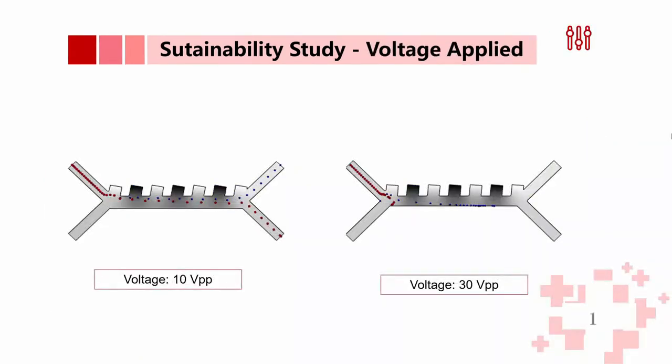For the observation of the voltage needed to achieve optimal separation, 10 volts peak-to-peak was the minimum requirement for this device to work and function well. When voltage of 30 or above was applied, the cells were damaged due to a phenomenon called Joule heat effect.